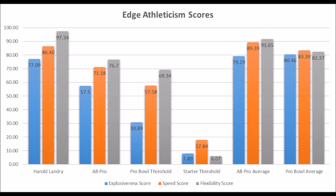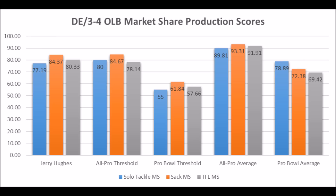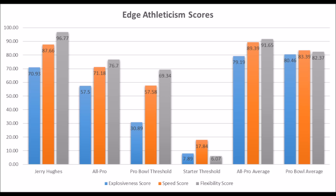In terms of a data comp, the best guy I could find was Jerry Hughes — who came out of TCU and currently plays for the Buffalo Bills. When you look at Hughes' production data, it's very similar to Landry's in terms of solo tackle, sack, and TFL data. His athleticism data is also very similar in terms of explosiveness, speed, and flexibility. From a data perspective, they're very close to being twins.